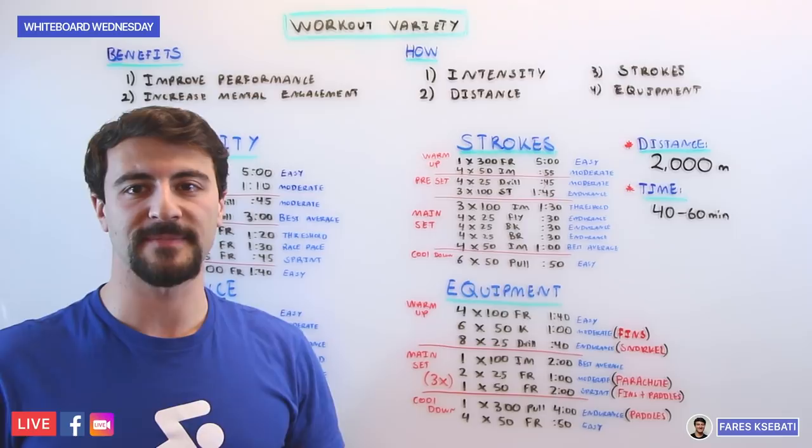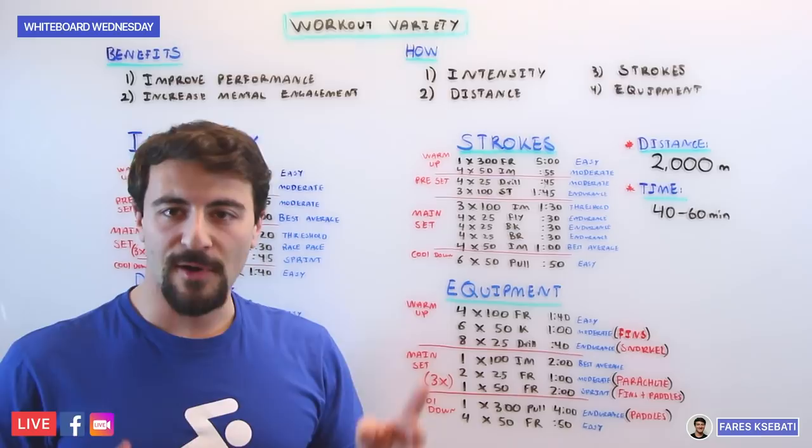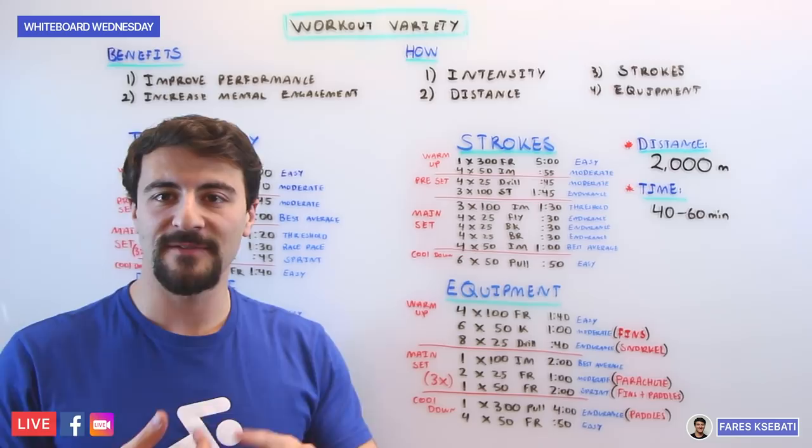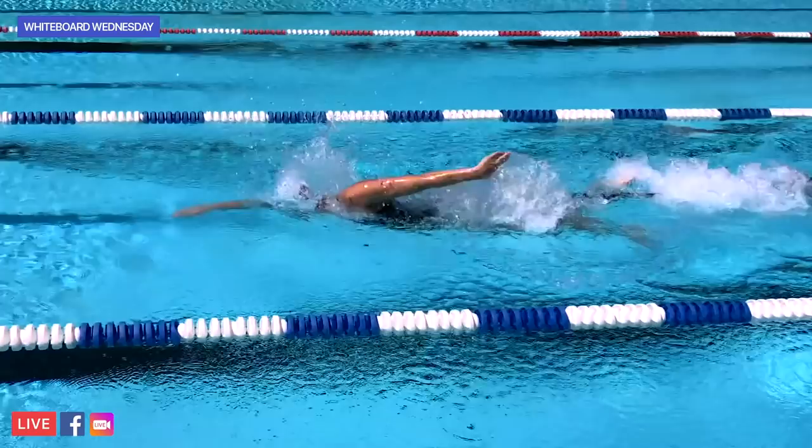So if we move to our final workout that's also 2,000 meters, but we vary by equipment. So toys, equipment, fins, paddle, snorkel, parachute, pull buoy—there's a whole number of different tools that you can use to keep things interesting, to not only increase your performance but also your mental engagement while you're swimming. So if we look at this final workout, we're going to start with 4x100s freestyle nice and easy on the 1:40.